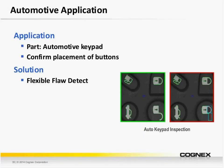Here's another automotive example where we're ensuring the appropriate features have been assembled in the right location on an automotive keypad. We could do this with several pattern tools, but FlexFlaw makes it easy by allowing us to apply a single FlexFlaw tool detecting all edges. FlexFlaw solves this application by detecting the incorrect logo — the lock logo — on the right-hand image.